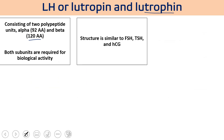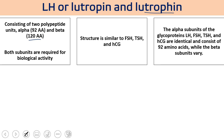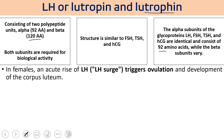Structurally FSH, TSH, HCG, and LH are similar, with the same alpha subunit differing only in the beta subunit. In females, there is an acute rise of LH — called the LH surge — occurring just before ovulation around day 12 of the cycle. Ovulation normally occurs at the mid-phase of the menstrual cycle, around day 14. This LH surge triggers the ovulation process and the Graafian follicle develops into the corpus luteum.